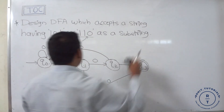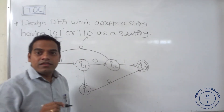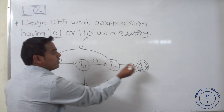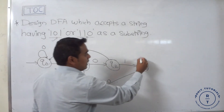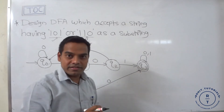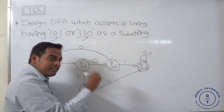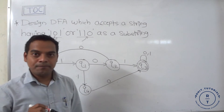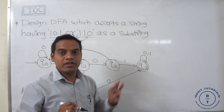Now at Q3 state: suppose 0 or 1 occurs. Since we know that 101 or 110 leads to Q3, after that, any number of 0s or 1s that come will keep the automata at Q3 state, because we have already fulfilled our minimum requirement — the string contains 101 or 110 as a substring. So both 0 and 1 at Q3 produce a self-loop back to Q3.